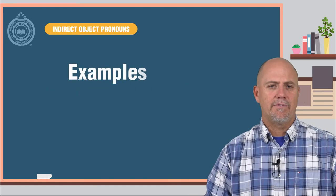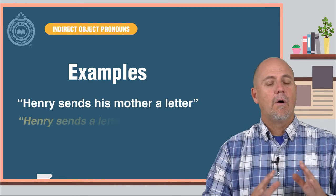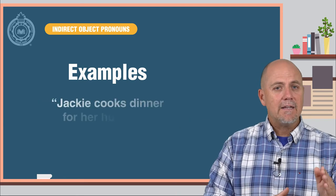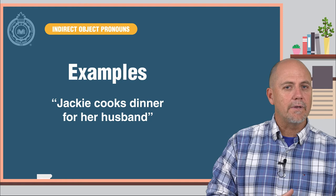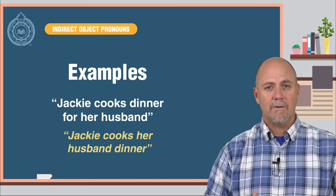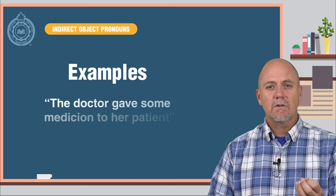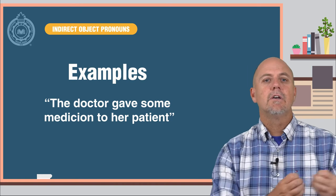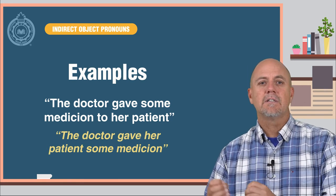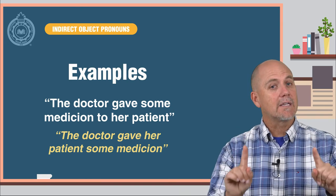Here are some examples. Henry sends his mother a letter, or Henry sends a letter to his mother. Jackie cooks dinner for her husband, or Jackie cooks her husband dinner. In this case, we use 'for' instead of 'to.' The doctor gave some medication to her patient, or the doctor gave her patient some medication. Once again, both ways are correct in English.